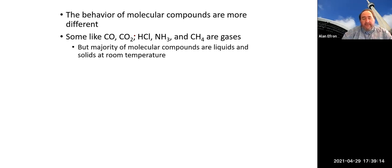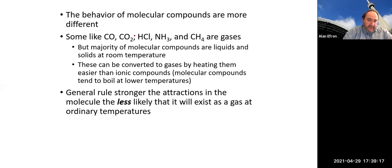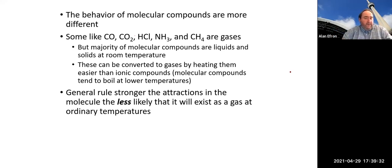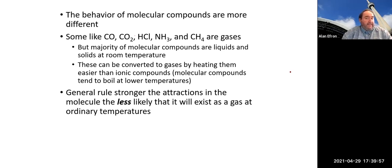This is very different from what we experience with molecular or covalent compounds — the ones that share electrons. Some things are gases right off the bat, like carbon dioxide, hydrogen chloride, ammonia, and methane (CH4). A vast majority of compounds are liquids and solids at room temperature, but it is usually much, much easier to convert a molecular compound into a gas than an ionic compound.